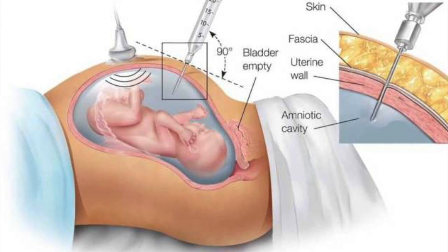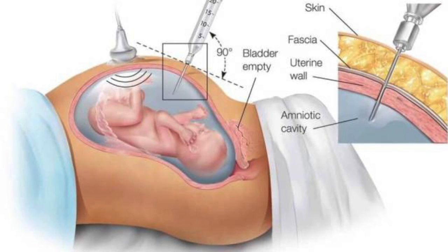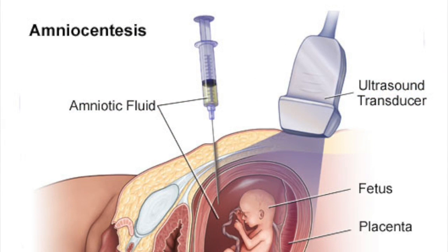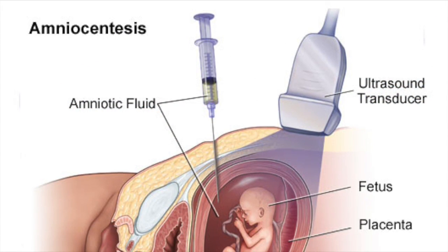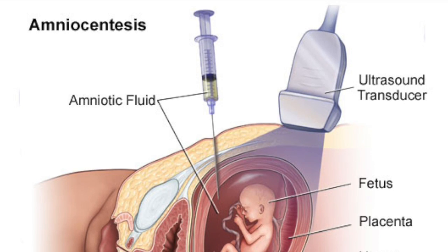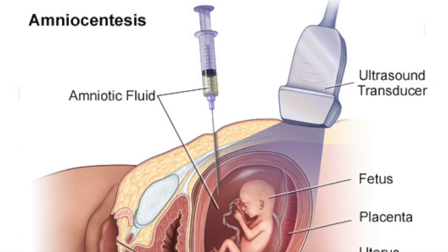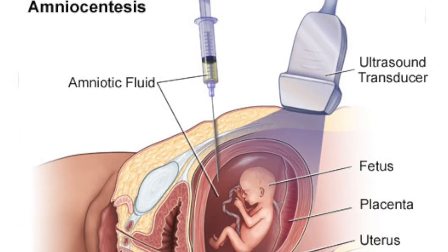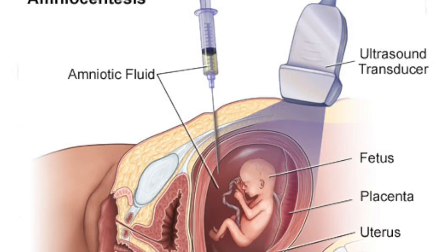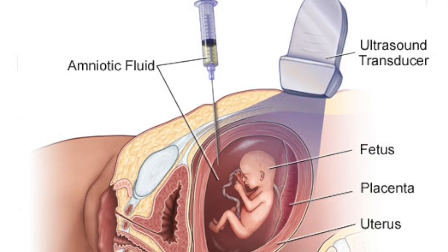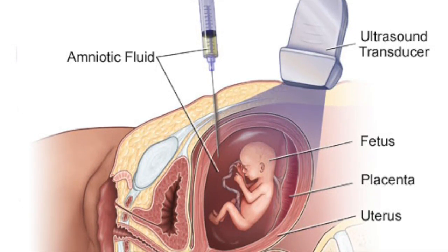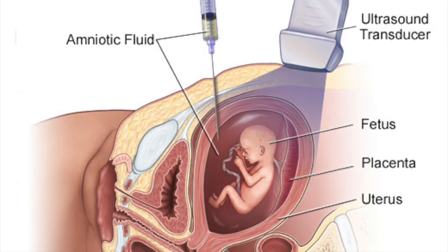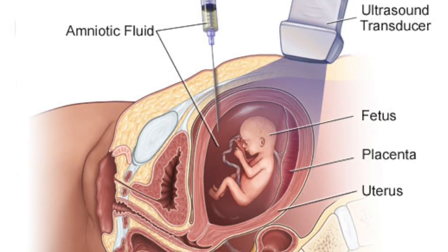So what happens is: the fetus — by fetus we mean the baby inside the body — is actually surrounded by amniotic fluid. The baby is enclosed in a sac, a bag-like structure, in which there is a fluid, and in that fluid the baby is floating. That fluid is called the amniotic fluid.